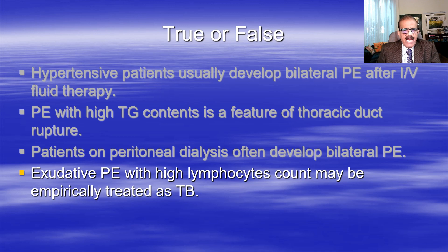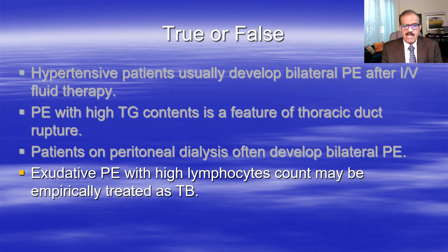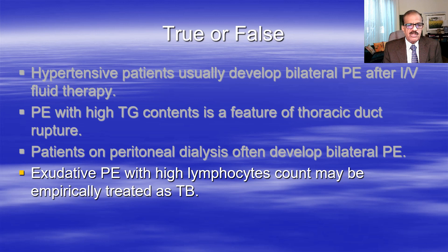Exudative pleural effusion with high lymphocyte count may be empirically treated as tuberculosis. In older days that is what we used to do - on circumstantial evidence: fever, weight loss, unilateral pleural effusion, exudate with predominant lymphocytes, we would assume tuberculosis and treat. These days MTB DNA PCR and GeneXpert make diagnosis more precise, but the statement is still true - lymphocytic exudates are most likely tuberculosis, at least in our society.